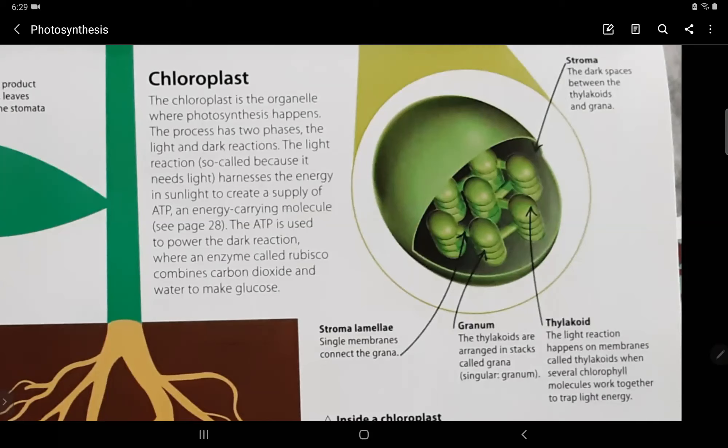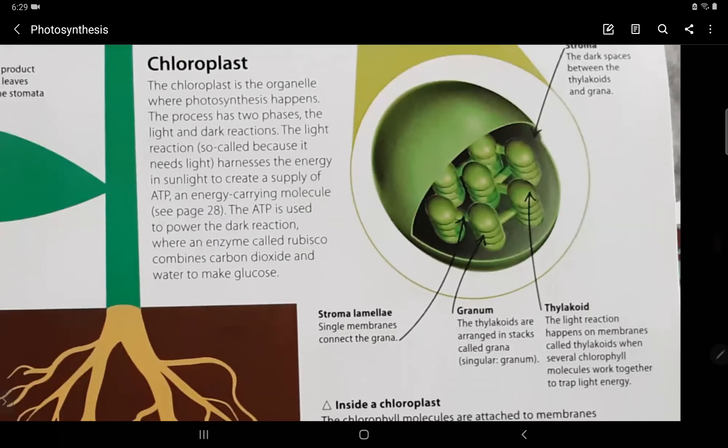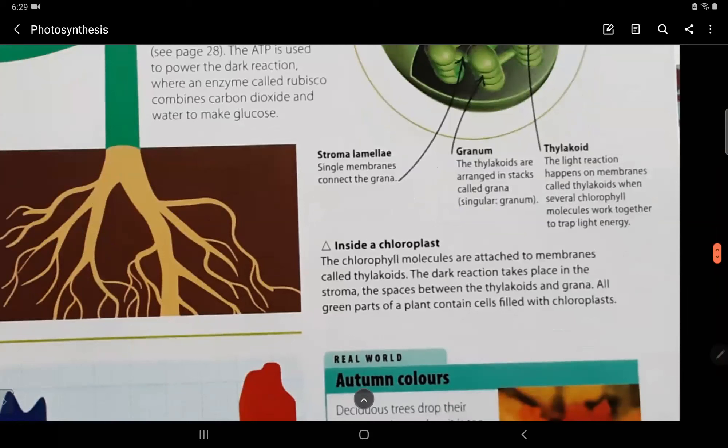Thylakoid. The light reaction happens on membranes called thylakoid when several chlorophyll molecules work together to trap light energy inside a chloroplast. The chlorophyll molecules are attached to membranes called thylakoid. The dark reaction takes place in the stroma, the spaces between the thylakoid and grana. All green parts of a plant contain cells filled with chloroplasts.